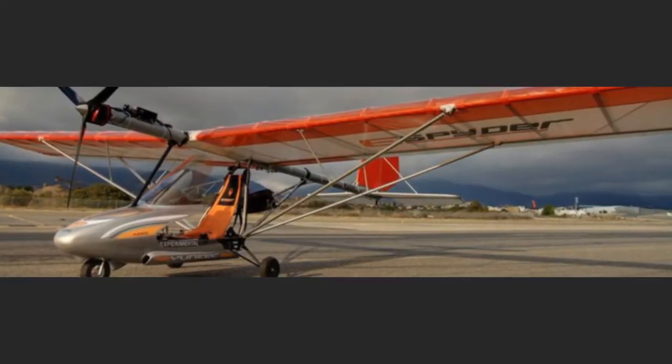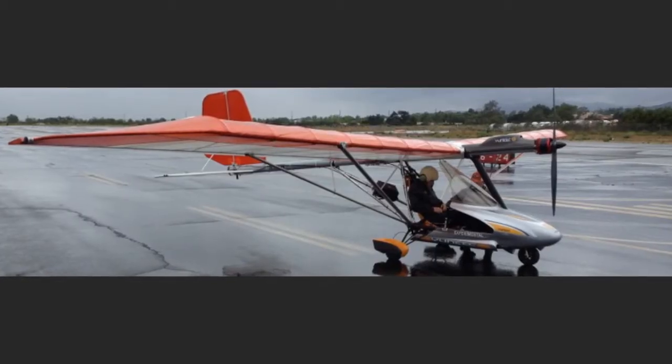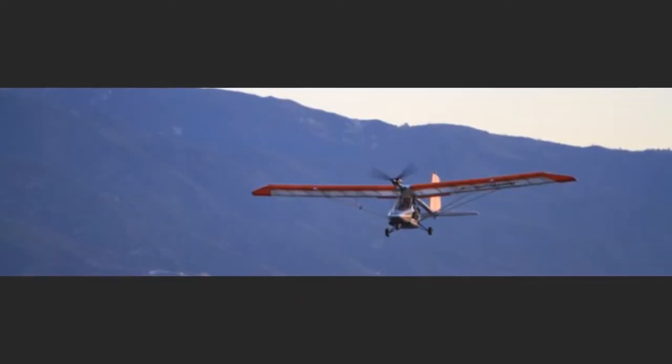The eSpyder is a compact flyer measuring 19.4 feet in length and 7.9 feet high with a wingspan of 33.1 feet. It is propelled by a 32 horsepower motor powered by a 13 kilowatt hour onboard lithium battery.